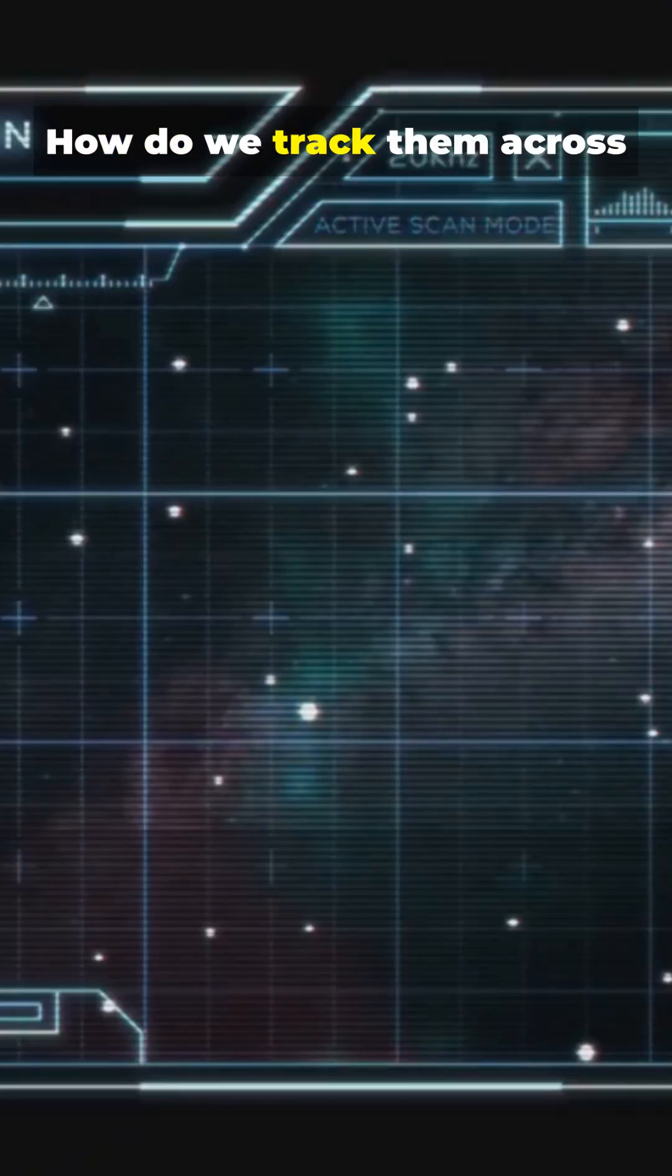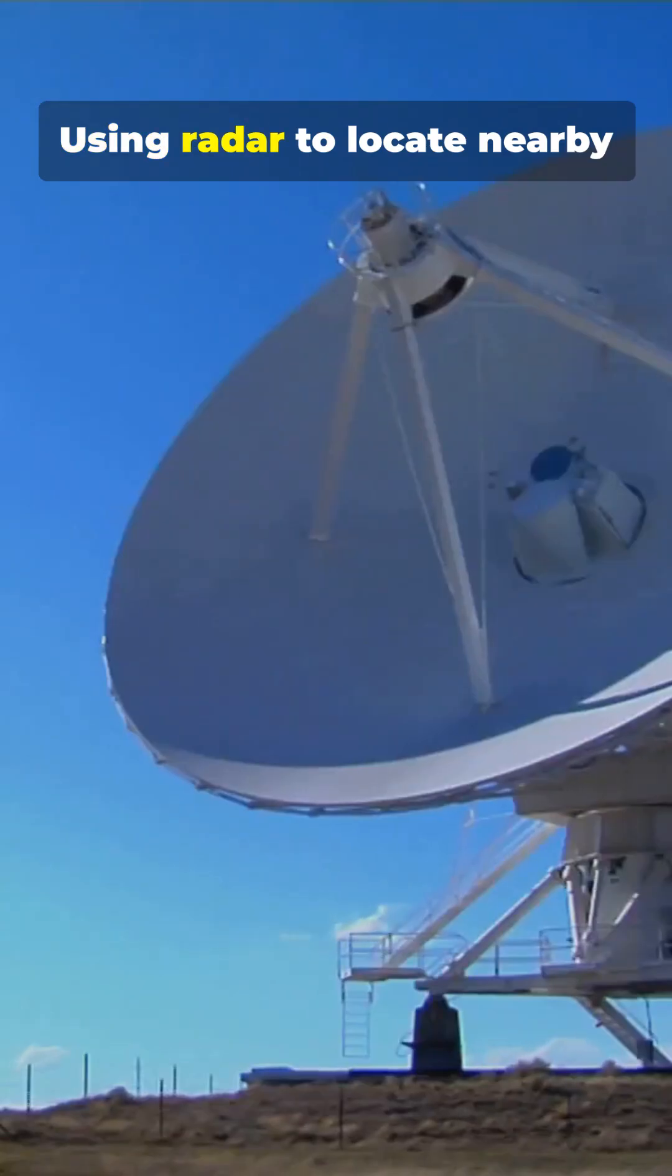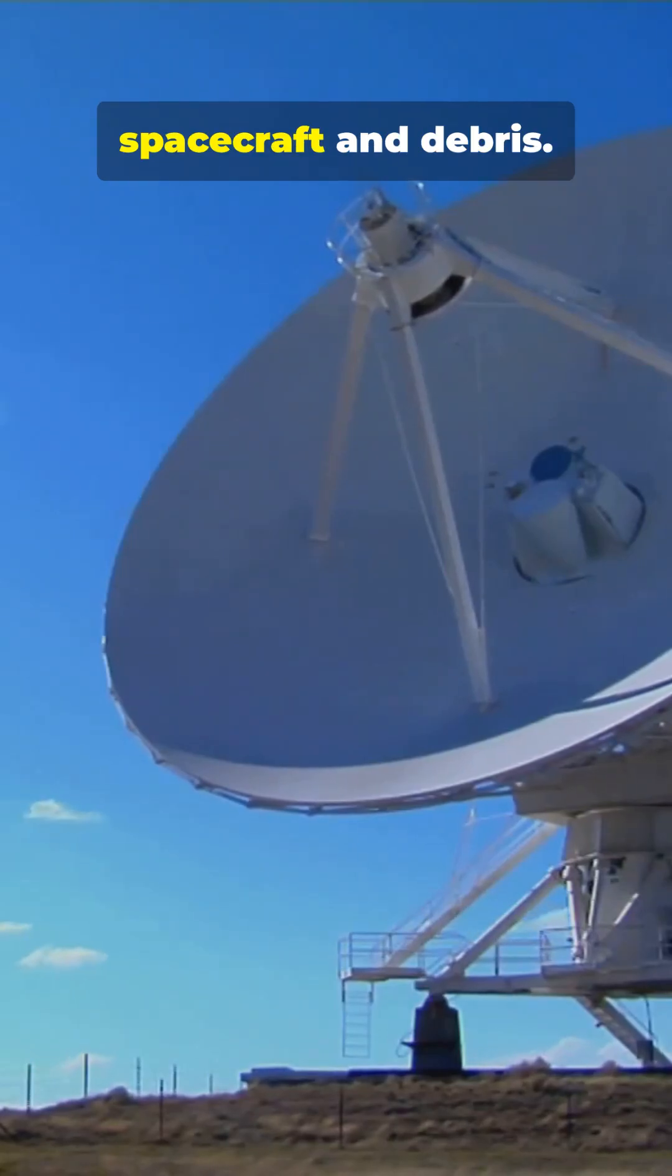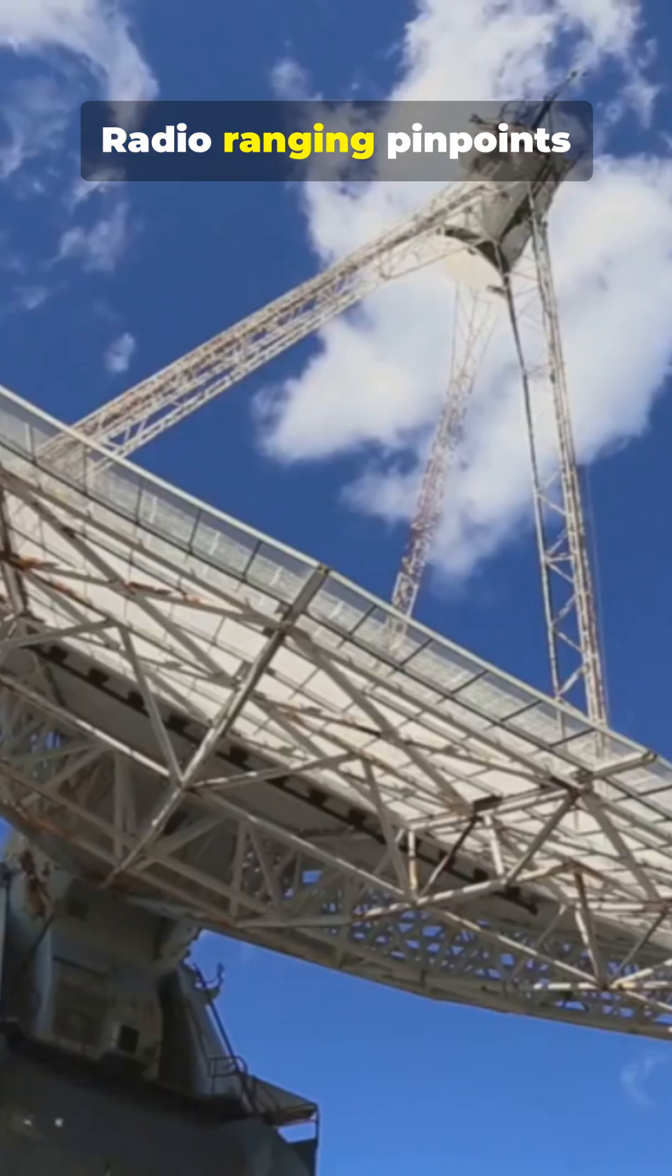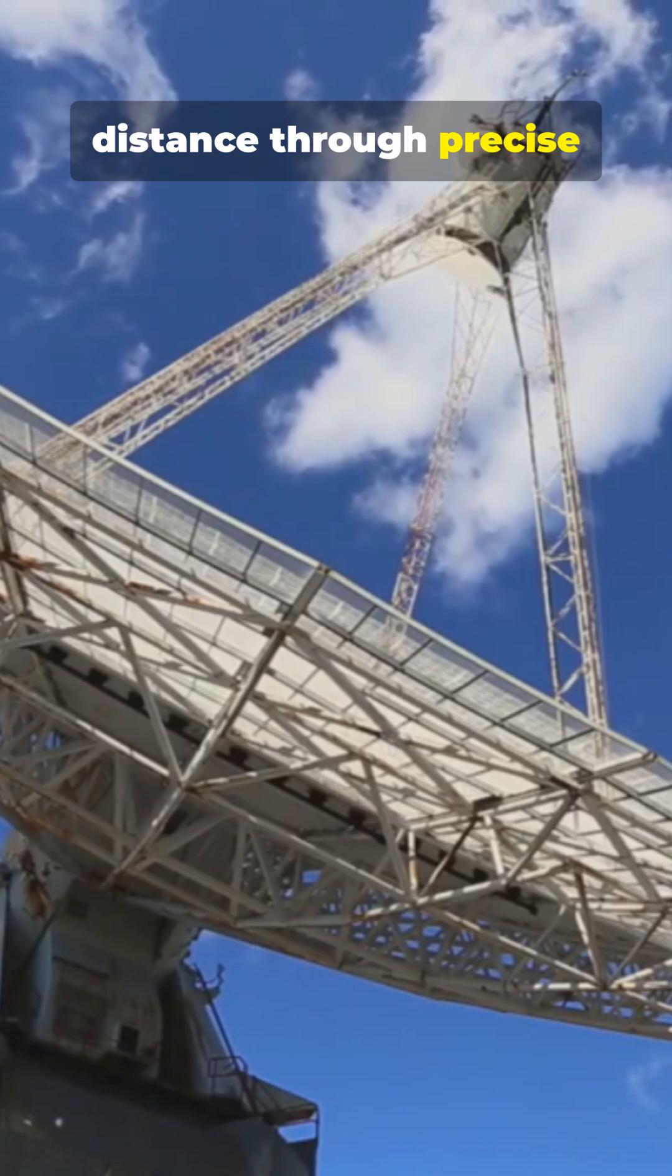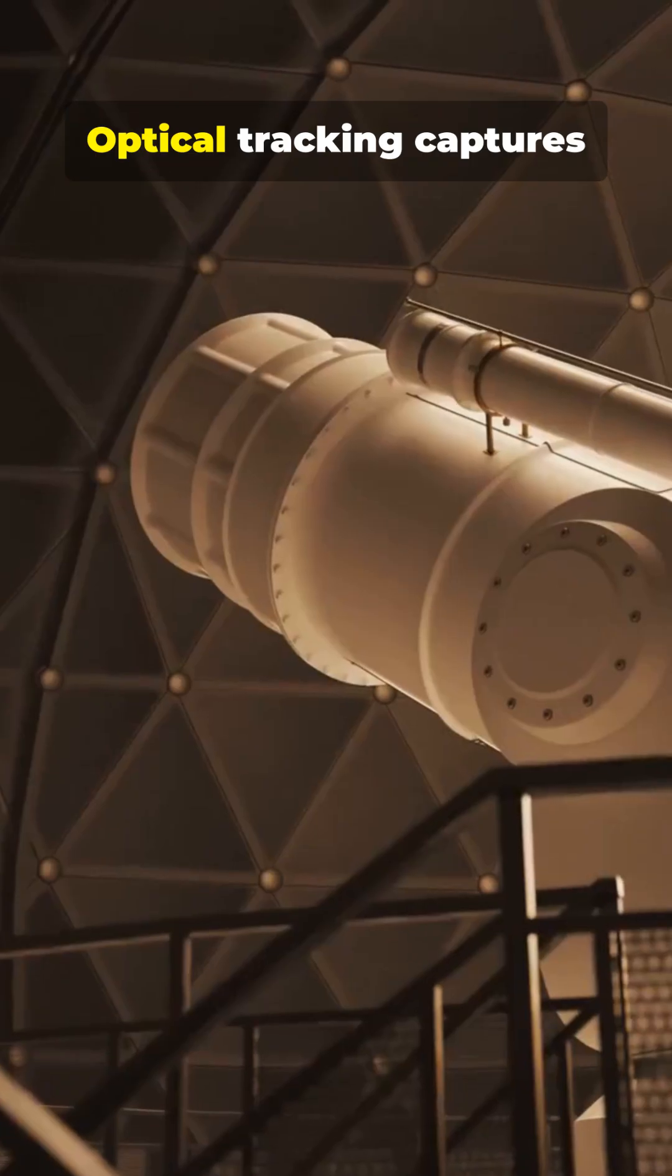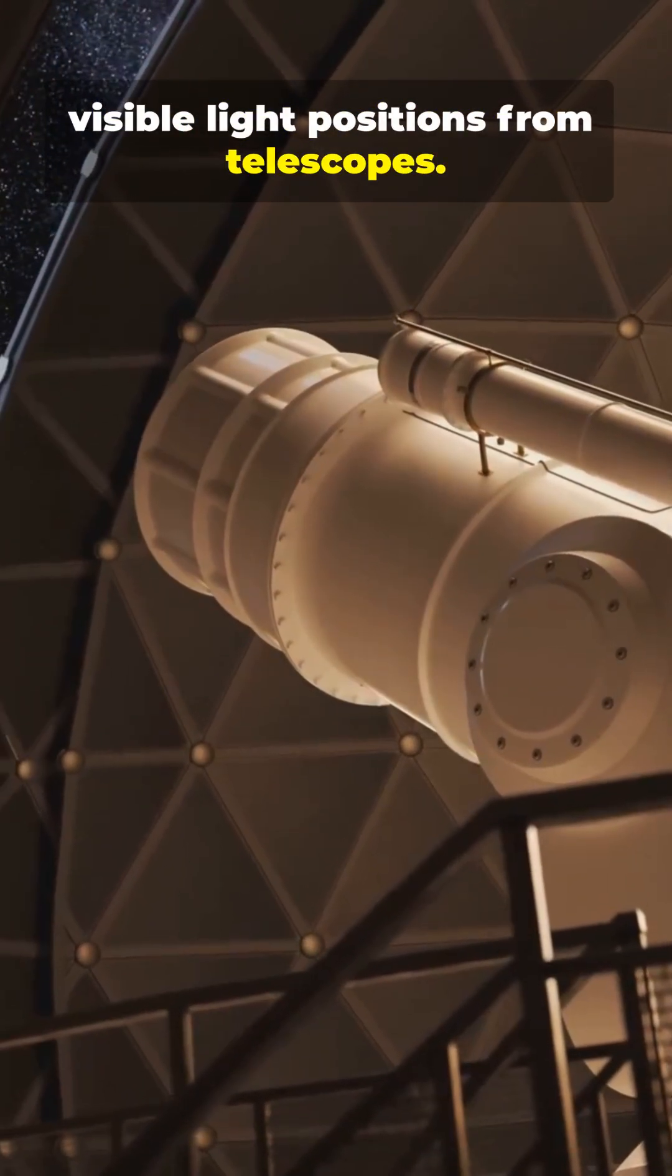How do we track them across vast distances? Using radar to locate nearby spacecraft and debris, radio-ranging pinpoints distance through precise signal timing, and optical tracking captures visible light positions from telescopes.